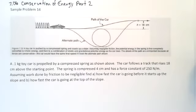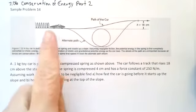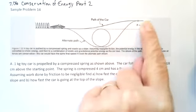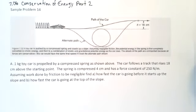So in this example, we have a toy car and it's being pushed against a spring and then it's being launched. It's going to go down the track around the loop to loop and come back up. And our problem reads a 0.1 kilogram toy car is propelled by compressed spring as shown above. The car follows a track that rises 18 centimeters above the starting point. The spring is compressed four centimeters and has a force constant of 250 Newton meters.